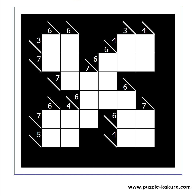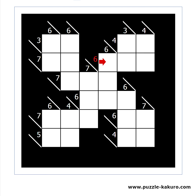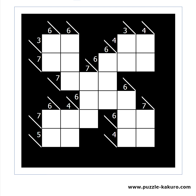The white numbers are the clues, which will help you find what numbers you should fill. The numbers under the line are the clues for the block of cells downwards. The numbers above the line are the clues for the block of cells to the right. Each clue represents the sum of the numbers in its block of cells.